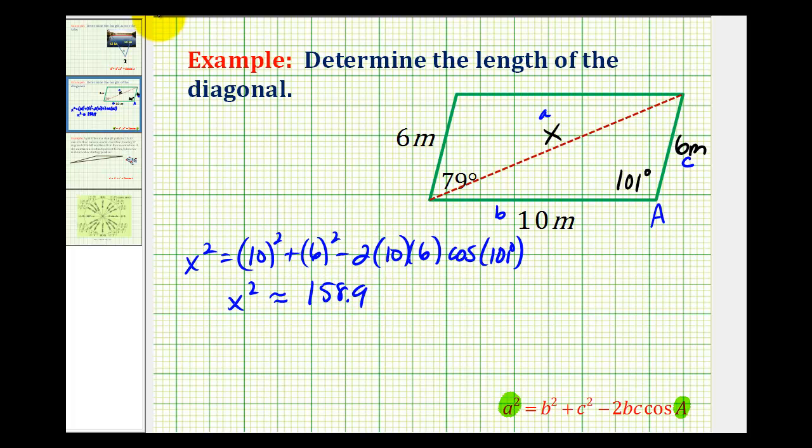And then to determine the value of x, we'll take the square root of both sides of the equation. And we're only concerned about the positive square root here, or principal square root. So x is going to be approximately equal to the square root of 158.9.